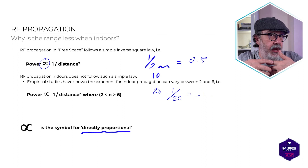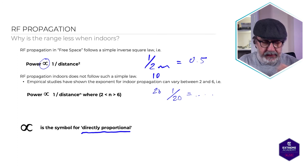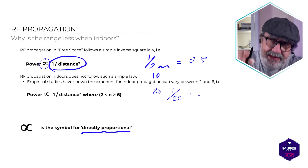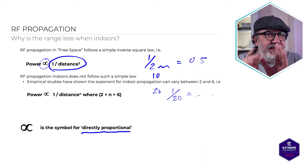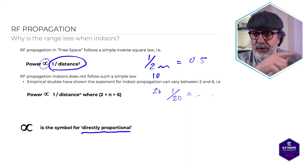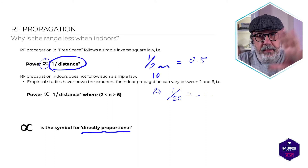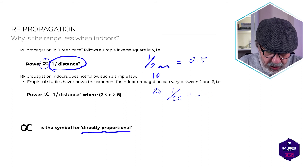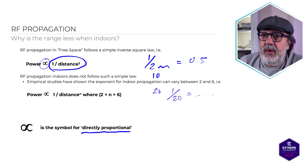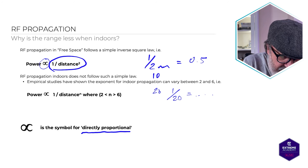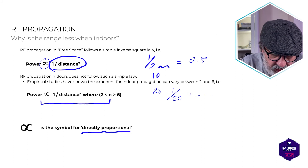In free space — an open football field, rugby field, or soccer field — the calculation is one divided by the distance squared. But indoors it's not so simple. Empirical studies, meaning studies done by observation rather than in a laboratory, show that indoors we certainly do not get the same range as outdoors. The clever people tell us the formula is different indoors.